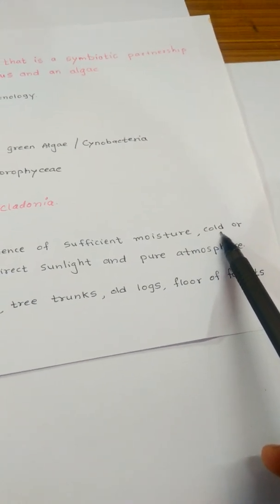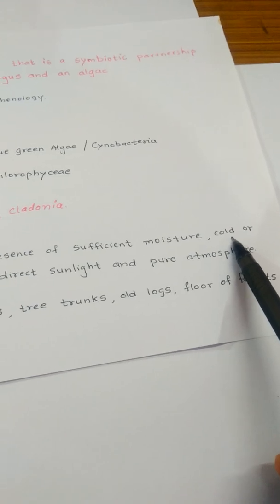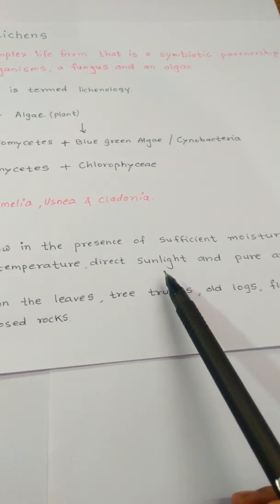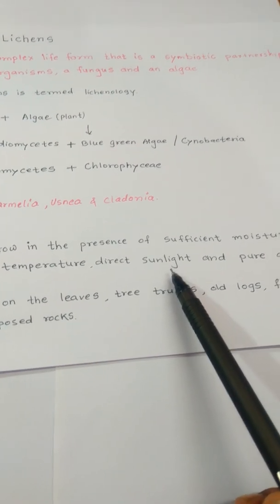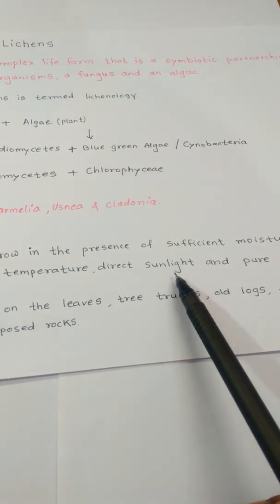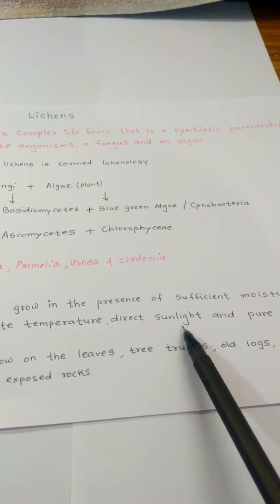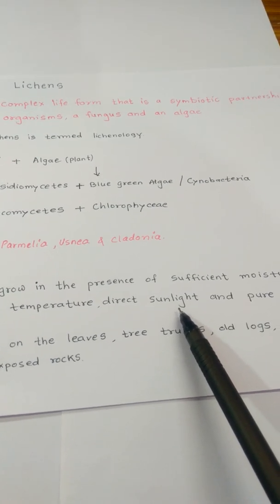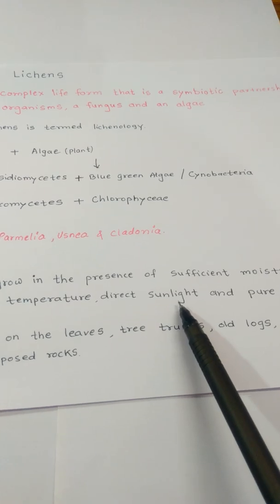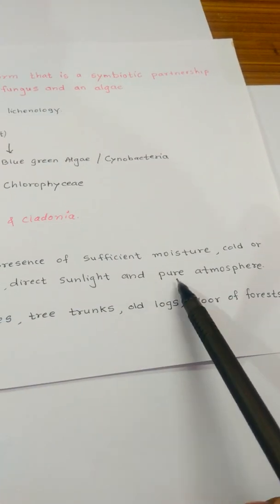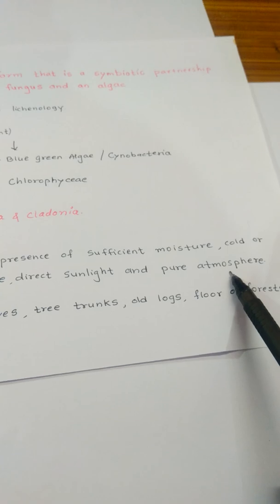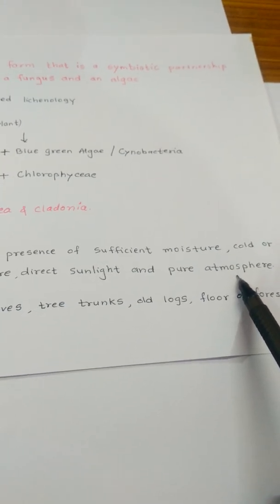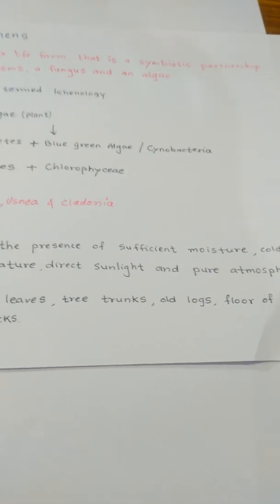Lichens especially prefer cold climates. They require direct sunlight and cannot grow in the dark, because sunlight is absorbed by the algal partner to prepare food material — just as in plants. Lichens also cannot grow in a polluted atmosphere; they only grow in a pure, clear atmosphere.